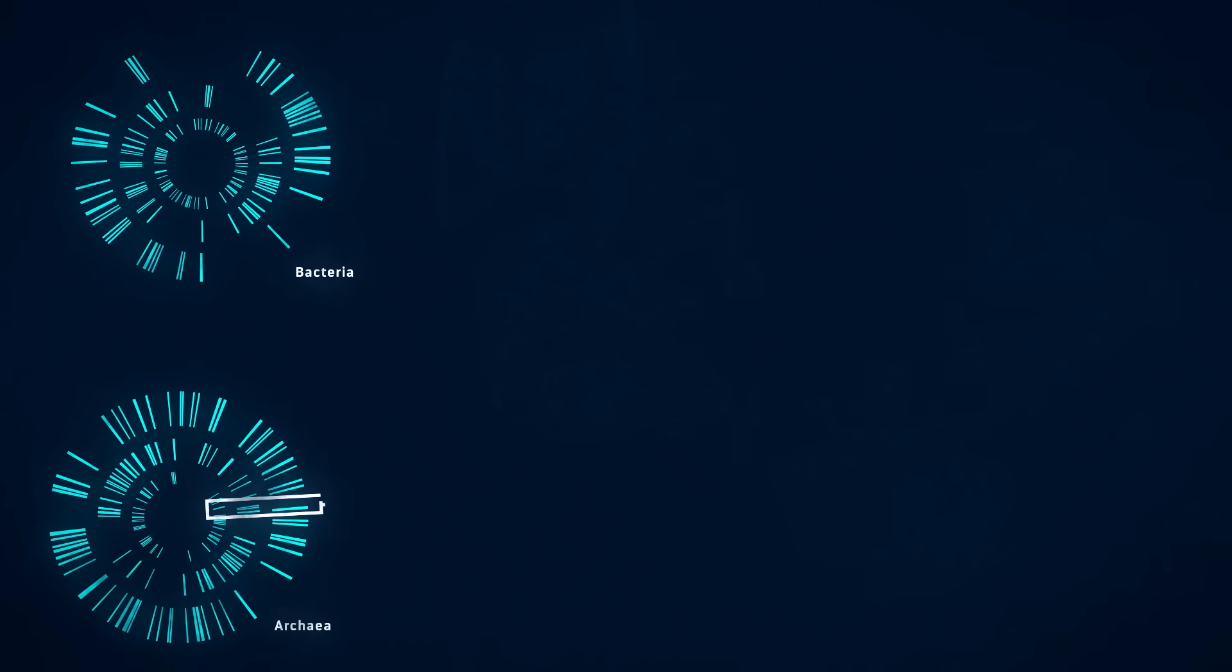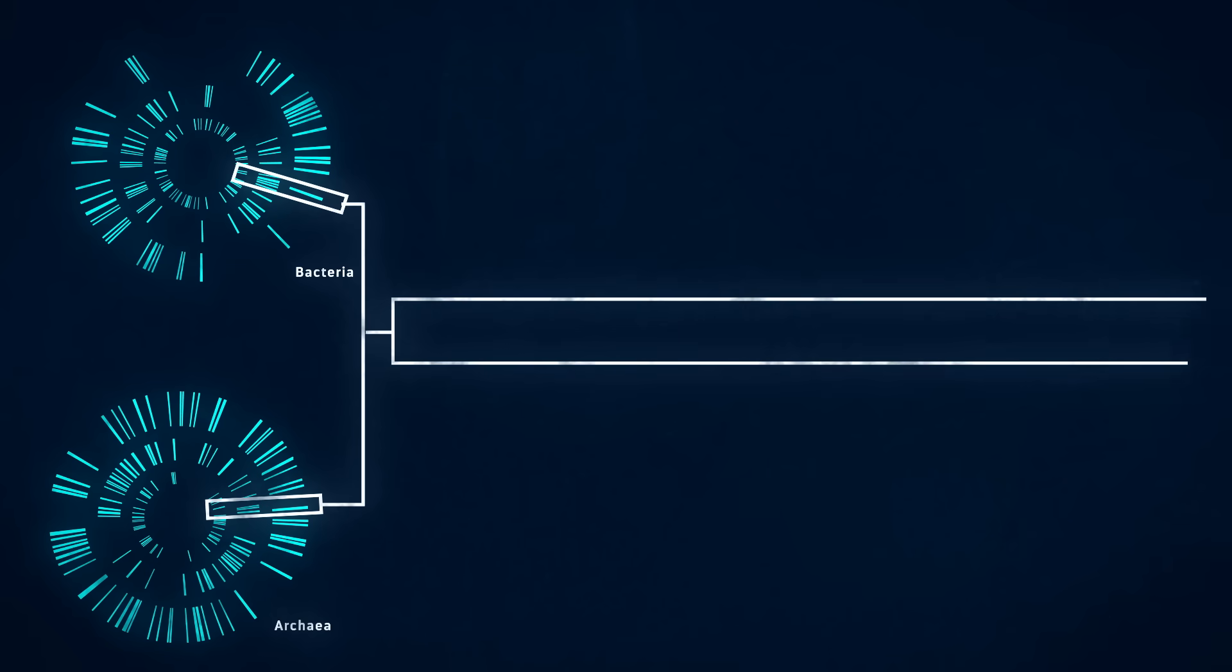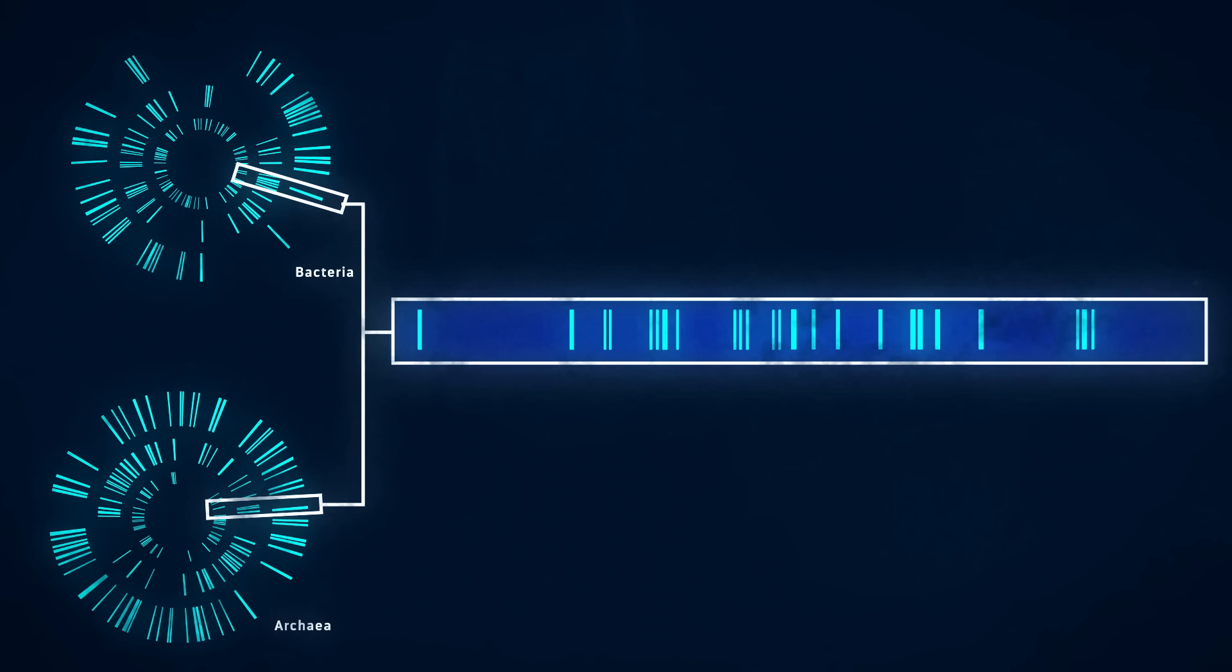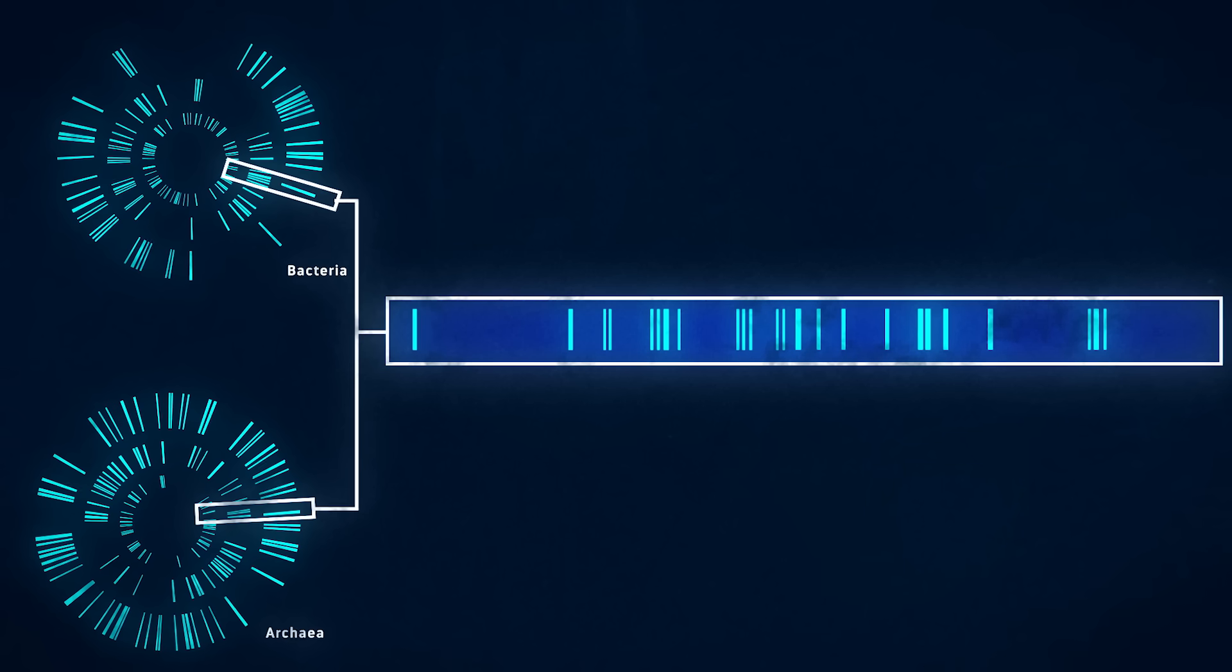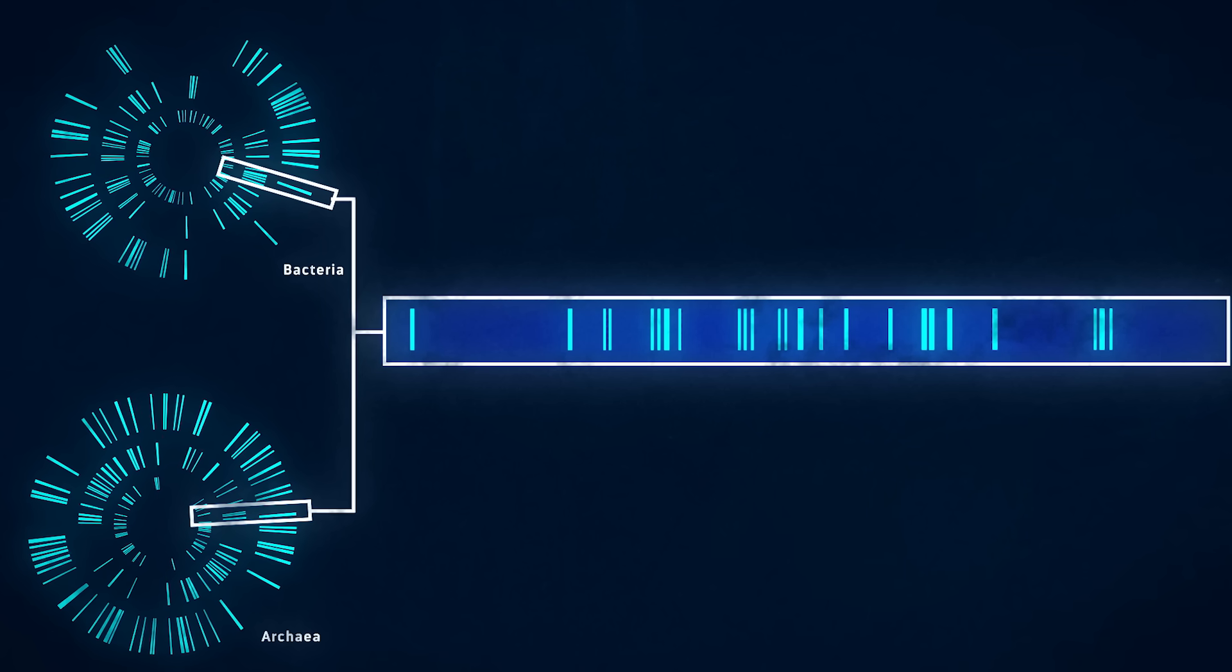So if you can find any gene in both archaea and bacteria, then there are two possibilities. Either the two groups traded genes at some point, which prokaryotes sometimes do, or they both inherited that gene from LUCA.